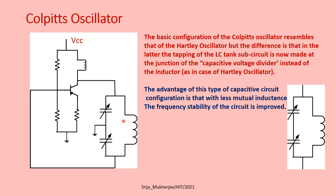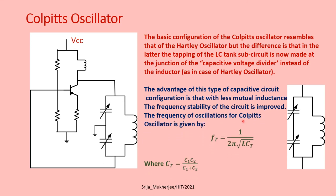This is the Colpitts oscillator and the output is the signal. The frequency of oscillations for the Colpitts oscillator is given by: f = 1 / (2π √(L · C_total)), where C_total is the series combination of C1 and C2: C_total = (C1 × C2) / (C1 + C2).